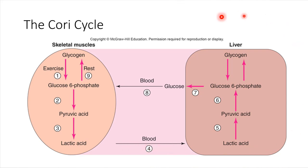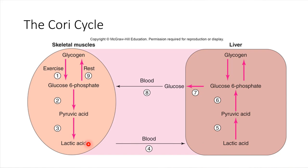The liver is the organ that deals with that buildup of lactic acid. The liver is able to take up lactic acid and convert it back the other direction — from lactic acid to pyruvic acid, and then pyruvic acid can be converted to glucose 6-phosphate. And glucose 6-phosphate can be converted into glycogen. So the liver does this amazing thing: it takes the waste product, the buildup of lactic acid from anaerobic respiration, and stores it in the form of glycogen.